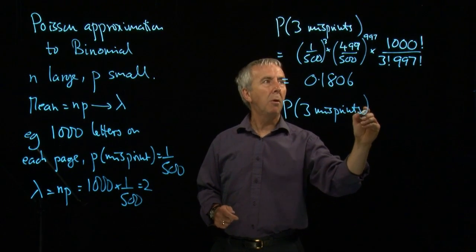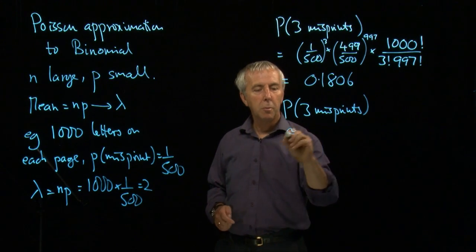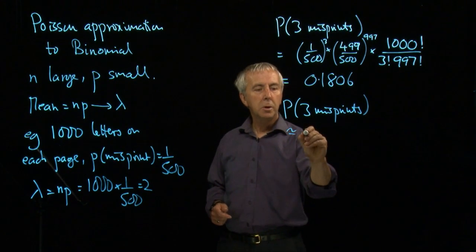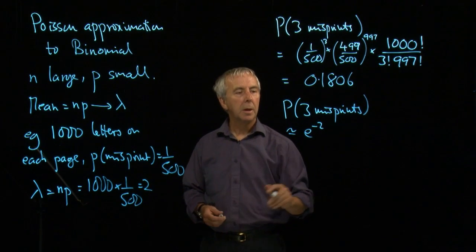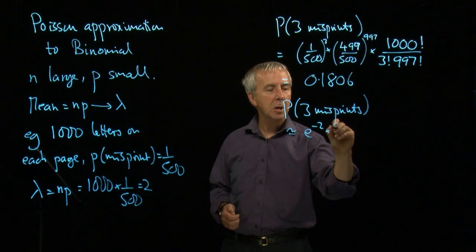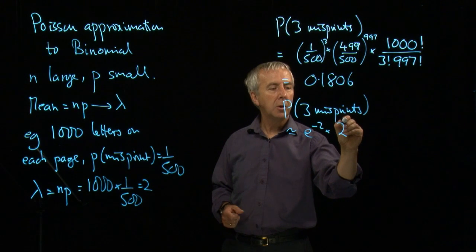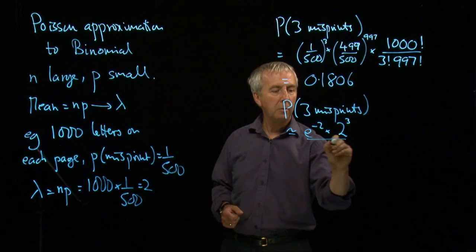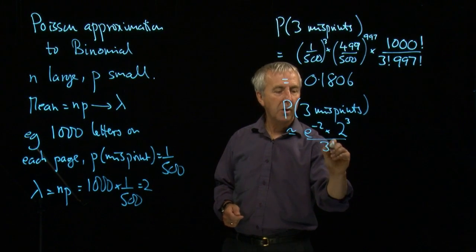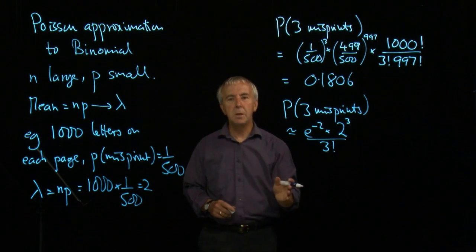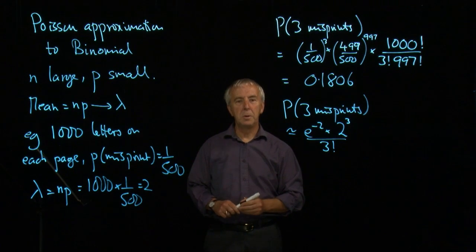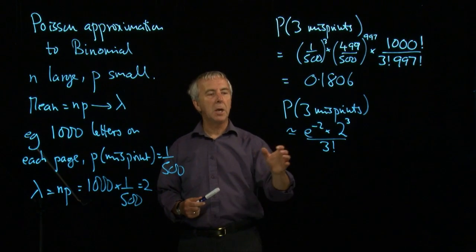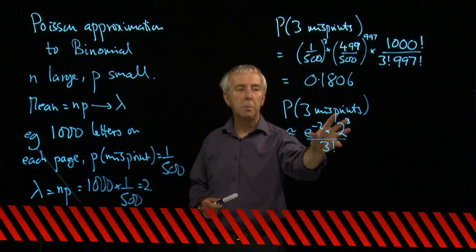This is going to be an approximation. So it's approximately equal to e to the minus lambda, that's e to the minus 2, times lambda to the x, which is 2 cubed, over x factorial. That's the Poisson formula. E to the minus lambda, lambda to the x over x factorial. And we can immediately see how much simpler this is going to be.